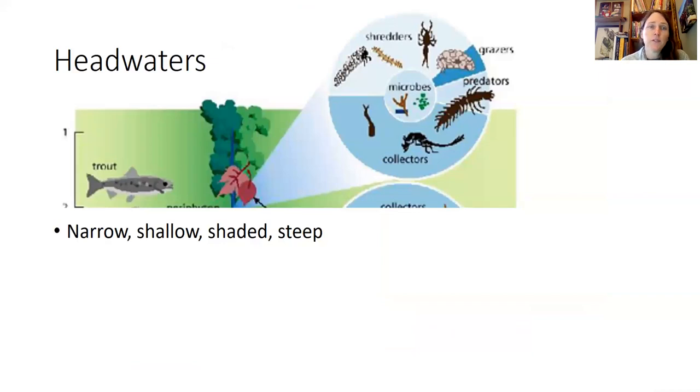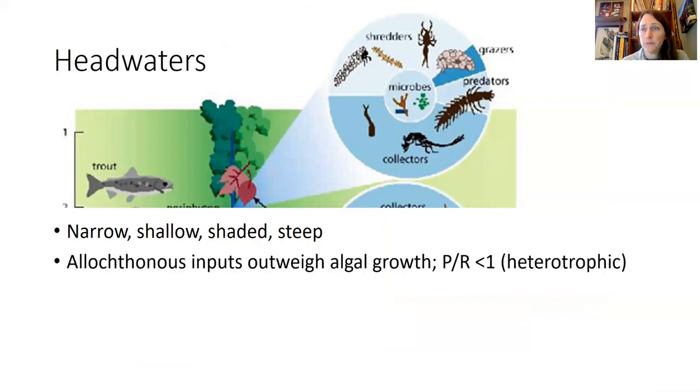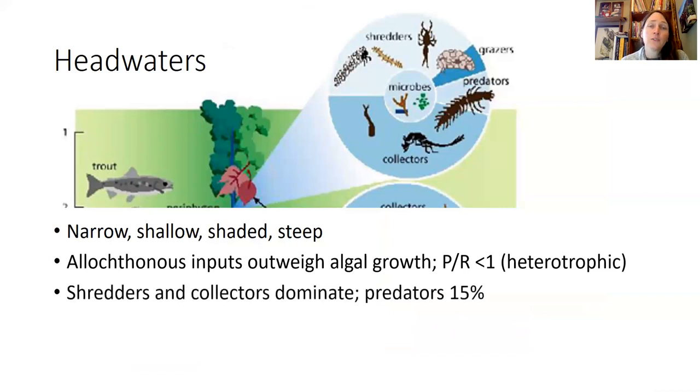Up at the headwaters, you tend to have narrow, shallow, shaded, steep streams. You have allochthonous inputs outweighing algal growth, and so your photosynthesis to respiration ratio tends to be less than one, a net heterotrophic stream. You're dominated by shredders and collectors with about 15 percent predators and mainly have cold water fish like trout, minnows, and sculpins.